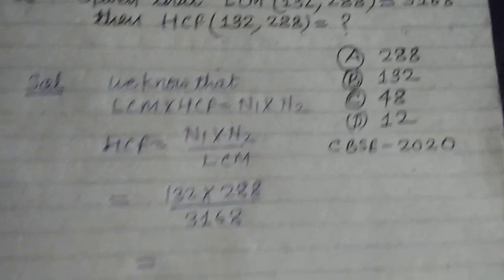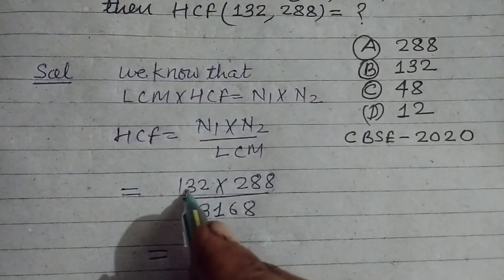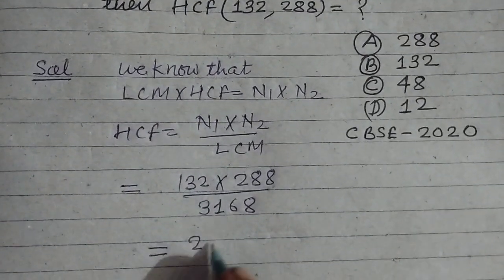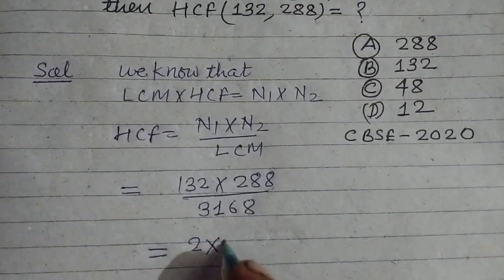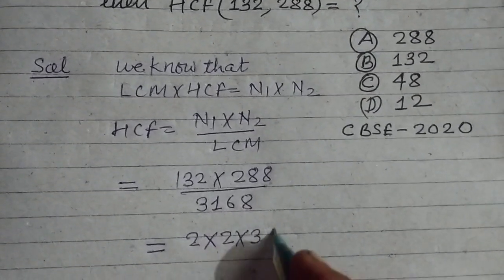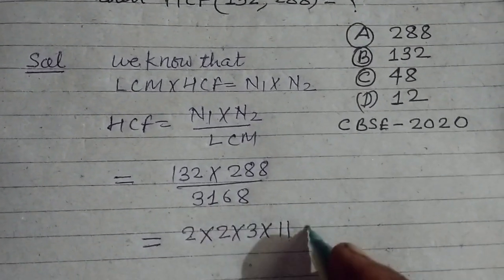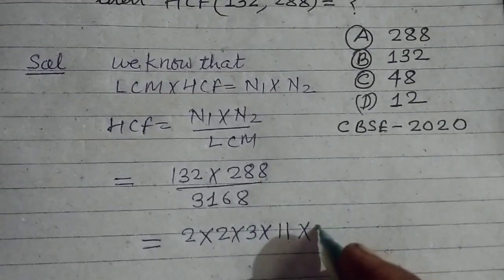Now we factorize the numbers. When we factorize 132, we get 2 times 4 is 8, 3 is 12, and 12 times 11 is 132.